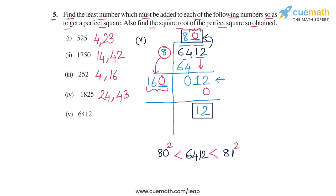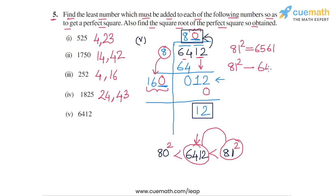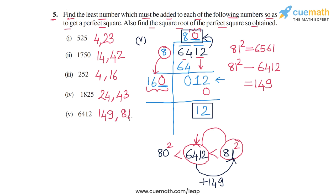The smallest number we can add to 6412 to get a perfect square is 81² − 6412. Since 81² = 6561, the difference is 6561 − 6412 = 149. So if we add 149 to 6412, we get 6561 = 81². The answer for part 5: add 149, and the square root of the resulting perfect square is 81. This completes all five parts of question 5.